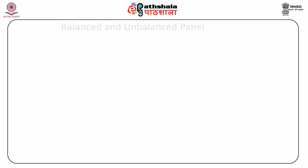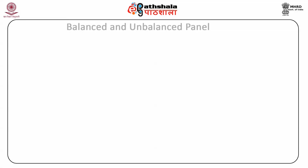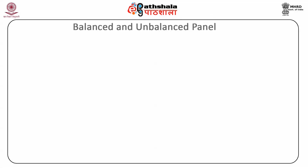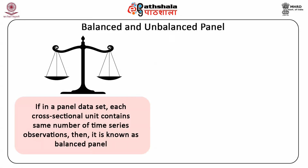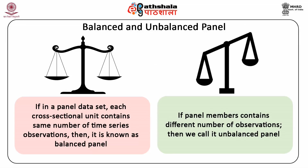Regarding balanced and unbalanced data: it is assumed that we have a maximum of n cross-sectional observations and a maximum of T time period observations for the analysis. If in a panel data each cross-sectional unit contains the same number of time series observations, then it is known as a balanced panel. Whereas, if panel members contain different numbers of observations, then we call it an unbalanced panel.